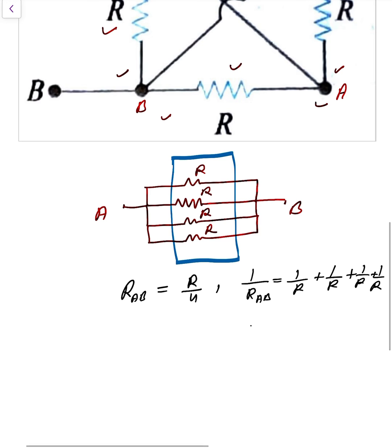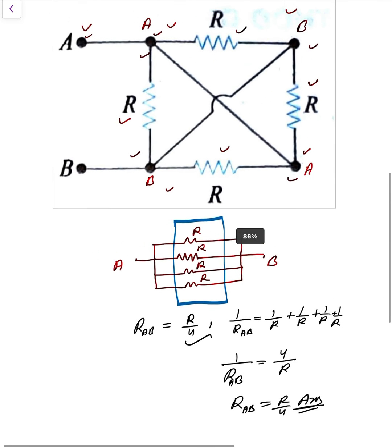So R of AB is 4 upon R, so R of AB is written as R by 4. If any doubt then write it out here, otherwise direct written.